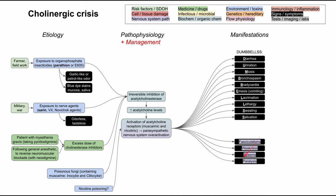There are also neuromuscular symptoms, because acetylcholine is important at the neuromuscular junction. You can have muscular fasciculations, weakness, spasms, and paralysis. And there's also bronchorrhea — yet another fluid-from-the-body symptom.